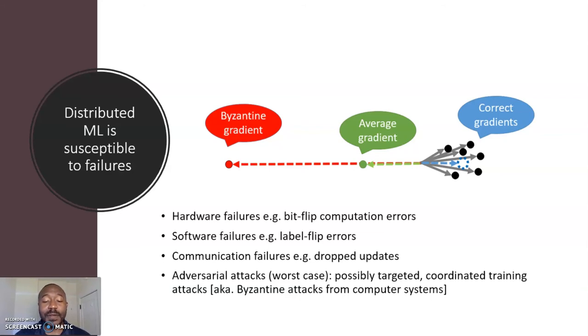The cartoon here shows a simple situation where a single gradient pointing in the wrong direction can lead to an arbitrary error in the aggregated gradients for distributed learning. I will expand on these cases in the next few minutes.